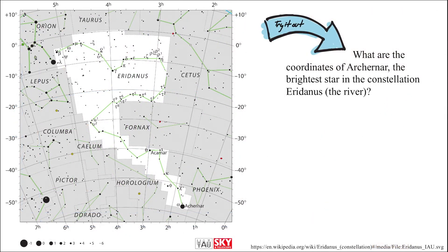Now it's your turn. What are the coordinates of Akronar, the brightest star in the constellation Eridanus? Take a close look at the star map on the left and determine which of the given choices is the best representation of Akronar's coordinates.